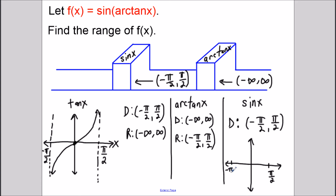Looking at the sketch, sine of x goes up to 1 and down to negative 1. But we're going to have an open circle at pi over 2, 1, and another open circle at negative pi over 2, negative 1. The reason is that the domain was restricted to the open interval from negative pi over 2 to pi over 2, so we cannot include those endpoints. Therefore, restricting the domain from negative pi over 2 to pi over 2, the range is going to go from negative 1 to 1, not including those endpoints.